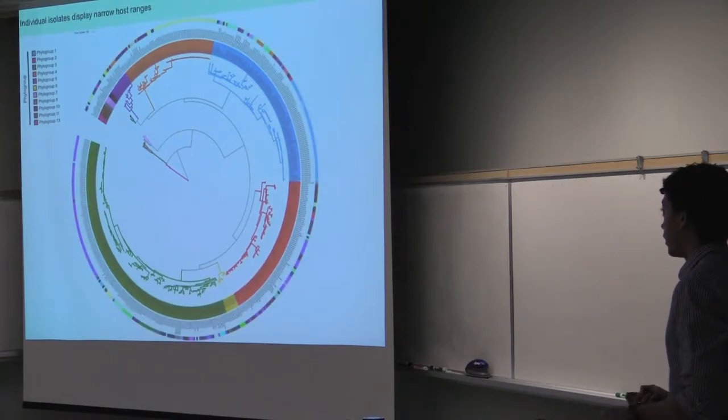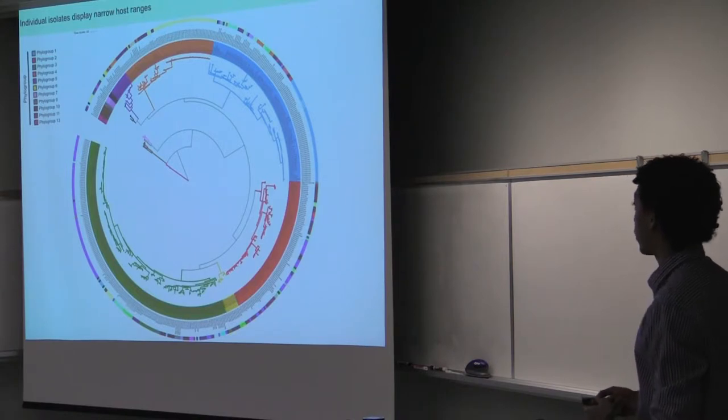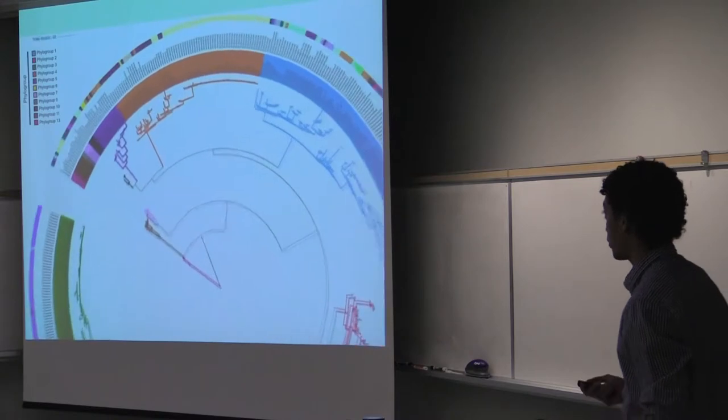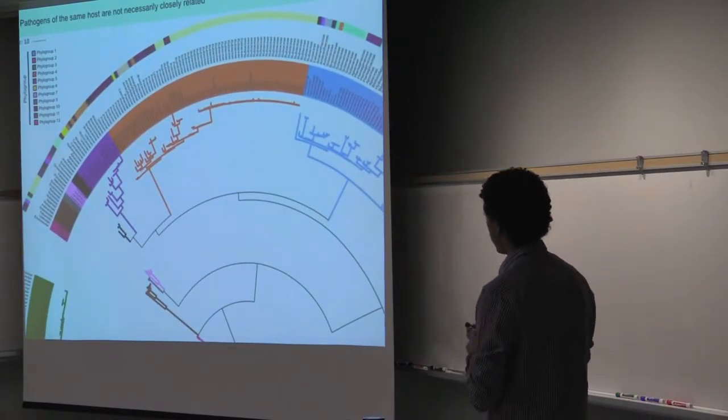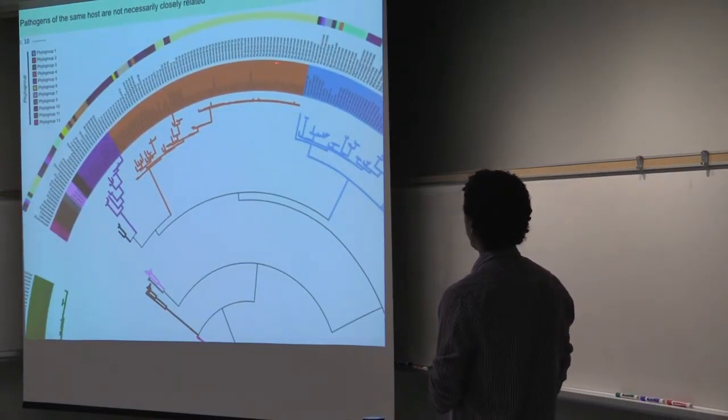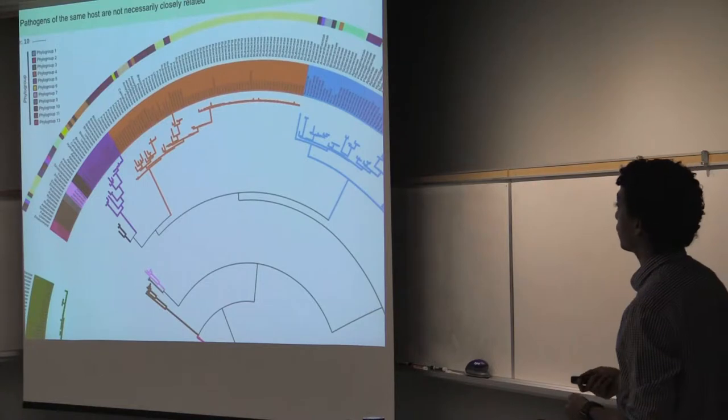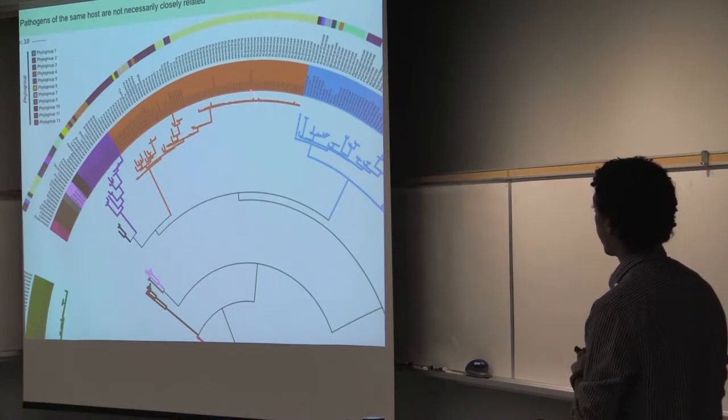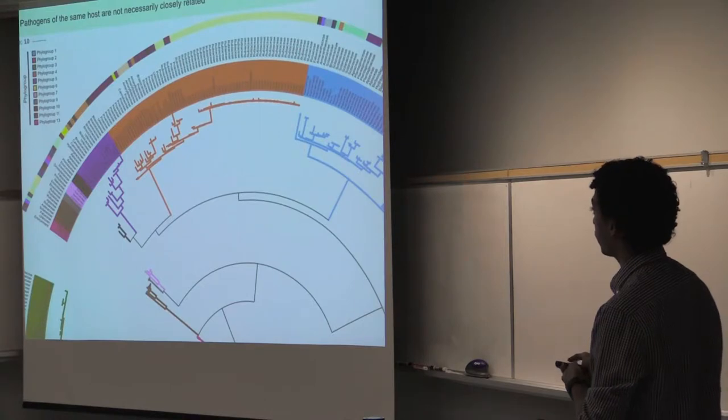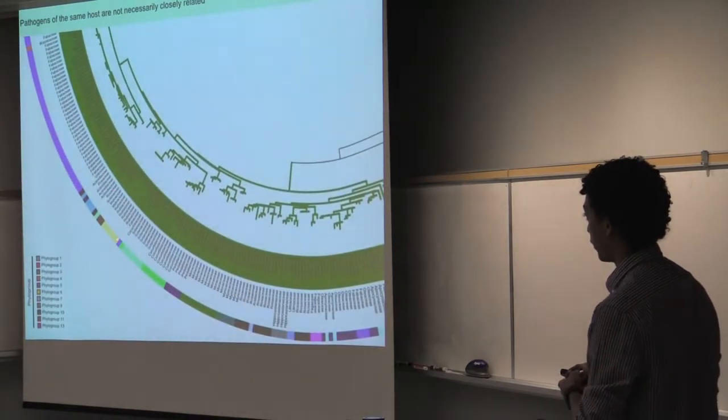And interesting for us, isolates that cause disease in the same host are not necessarily closely related. So I'm showing you here at the top, for example, coffee plants belong to the Rubiaceae family. And I'm showing these coffee plants over here as well in this color of yellow. So we have, for example, coffee pathogens that cause disease in coffee on phylogroup 4, here in orange, phylogroup 11, here in brown, and out here on phylogroup 3, which is shown in green.